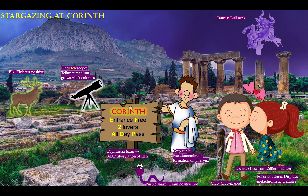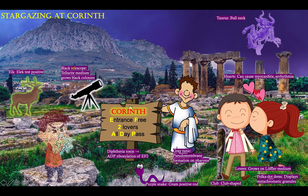Notice that our lovers here are kissing each other and there are these little hearts coming off as they're in love. The heart will remind you that diphtheria can cause myocarditis and arrhythmia.